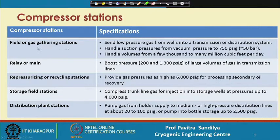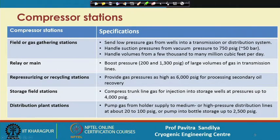These stations are of different types: fluid or gas gathering stations, relay or main stations, depressurizing and storage well stations, and distribution plant stations. All these different types of stations do different kinds of work for different levels of compression.